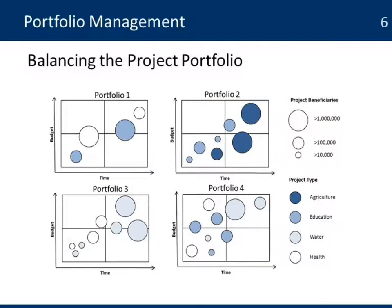Balancing the project portfolio is another exercise that happens usually on a yearly basis. Senior management will look at all the projects from different views — we have here four examples. They look at how much a project might cost, the number of beneficiaries impacted, and the type of project being implemented. These different views, depending on where you are in the organization, will let you know where your projects stand. Maybe you have too many large projects, or too many small projects that are consuming too many internal resources and are more difficult to manage.